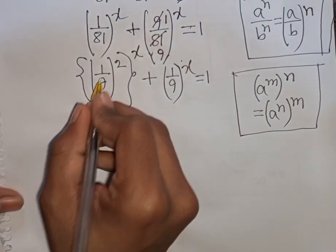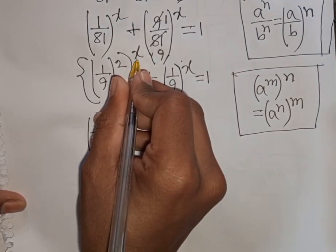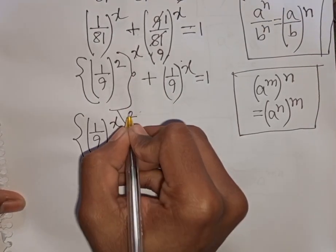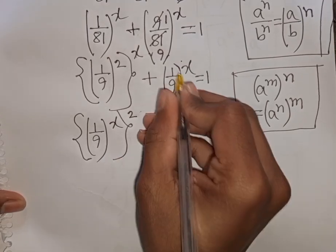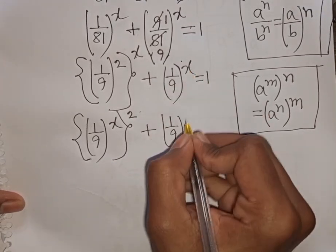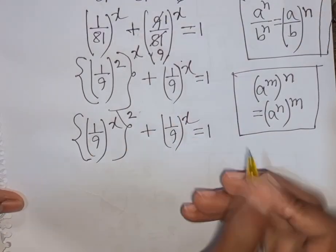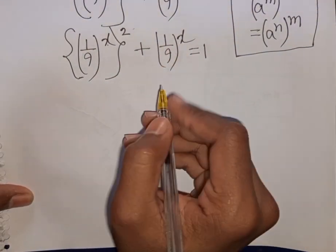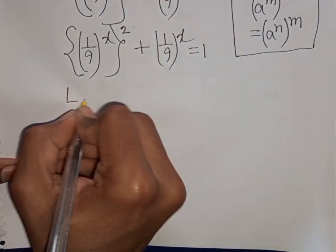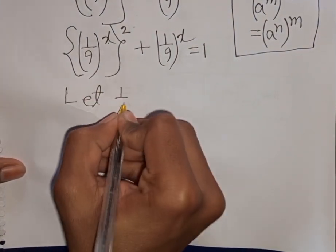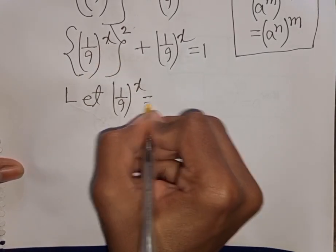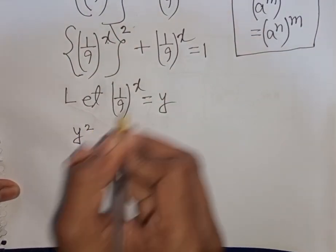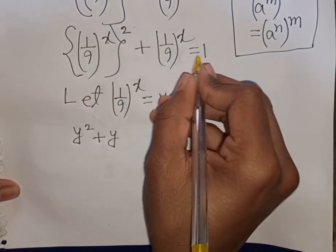So according to this rule, we can write (1/9)^x to the power x, then (1/9)^x to the power x equals 1. Now we see both terms (1/9)^x are the same. Let (1/9)^x be substituted by y, so our equation becomes y squared plus y equals 1.